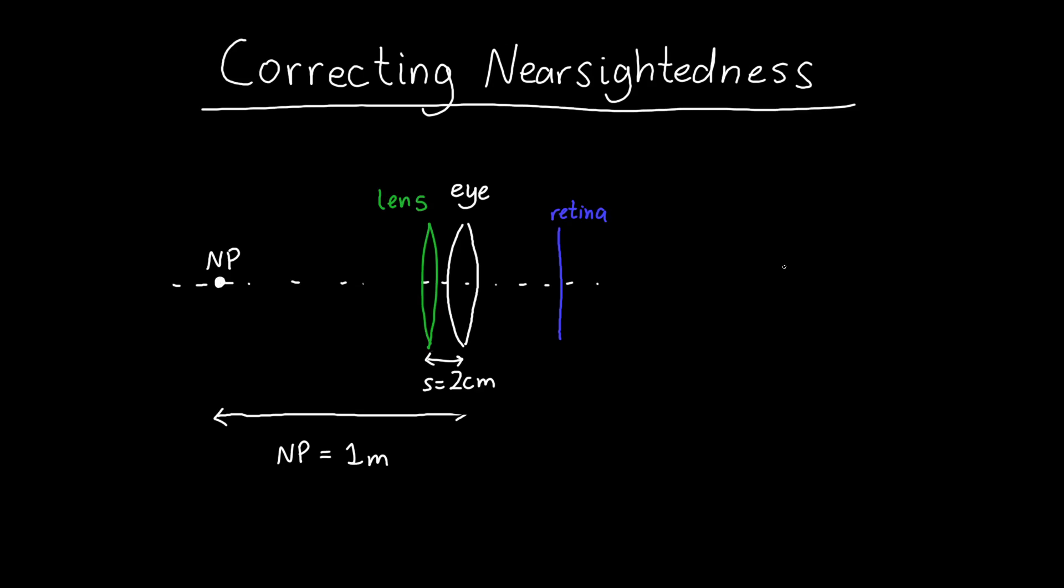In this video, we're going to learn how to correct nearsightedness with a lens. And so let's say that we've got a patient comes in, and their near point is one meter away from their eye.